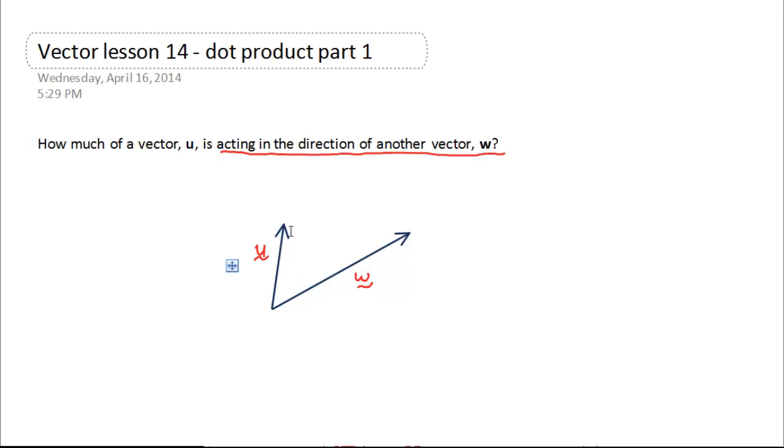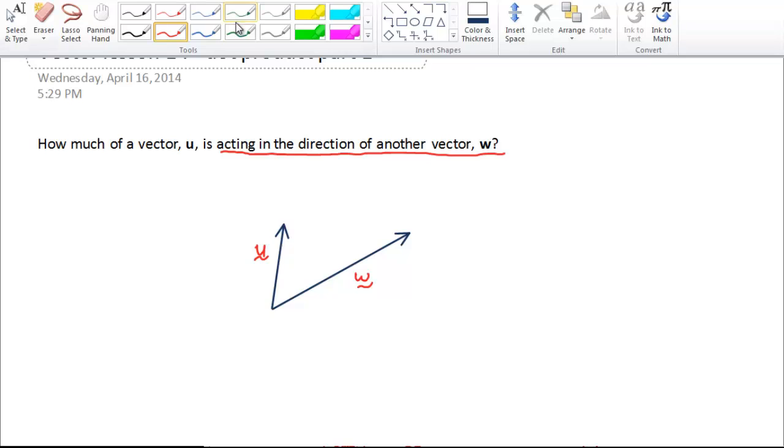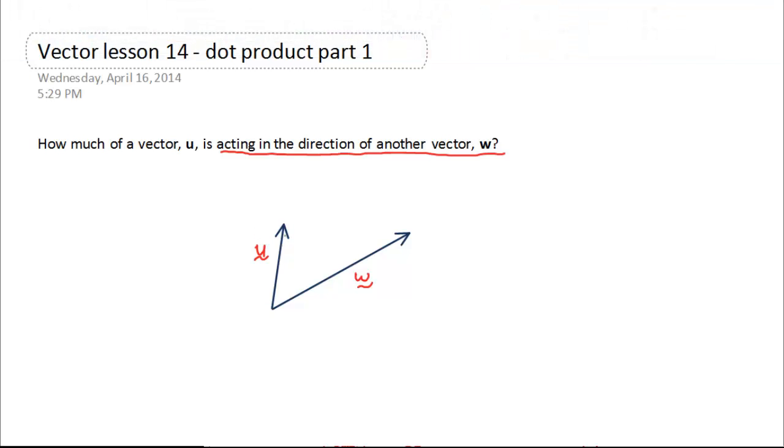In other words, I want to break down vector u into two vectors, such that part of vector u, so I'm going to draw it with a different color, part of vector u is acting in this direction, in the same direction as w. And then, the rest of u is acting in the direction perpendicular to u.